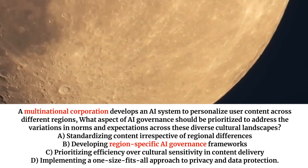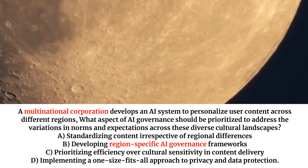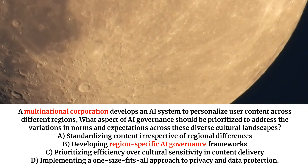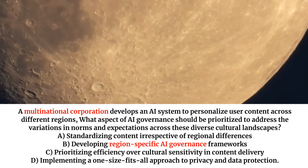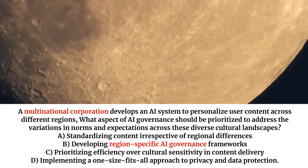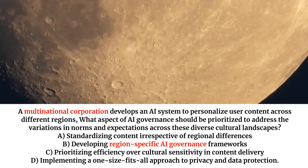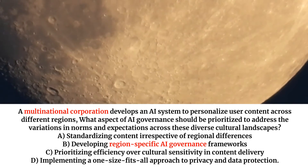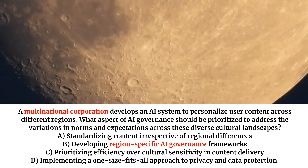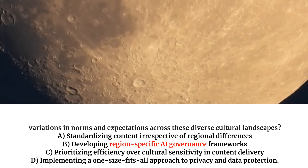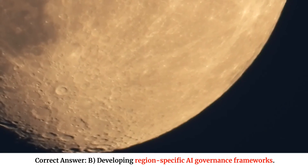A multinational corporation develops an AI system to personalize user content across different regions. What aspect of AI governance should be prioritized to address the variations in norms and expectations across these diverse cultural landscapes? A. Standardizing content irrespective of regional differences. B. Developing region-specific AI governance frameworks. C. Prioritizing efficiency over cultural sensitivity in content delivery. D. Implementing a one-size-fits-all approach to privacy and data protection. Correct answer: B. Developing region-specific AI governance frameworks.